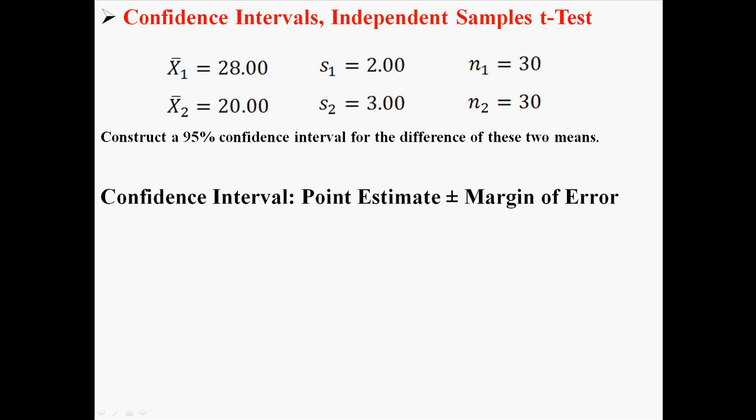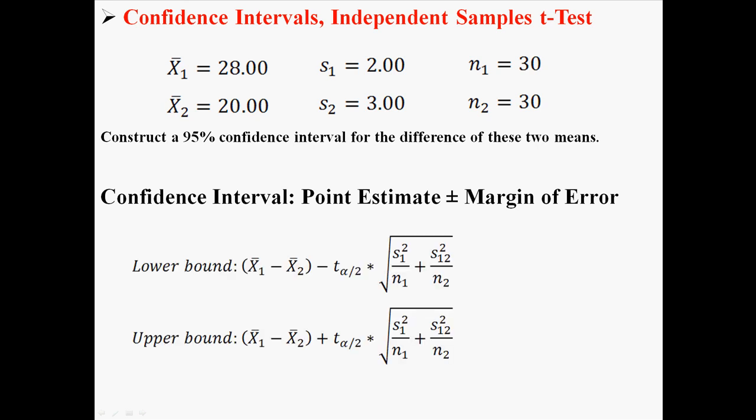First of all, remember that a confidence interval is just a point estimate plus or minus the margin of error. So that means we're going to end up with two values, a lower bound and an upper bound, and we're going to be 95% confident that the mean is somewhere between those two points.